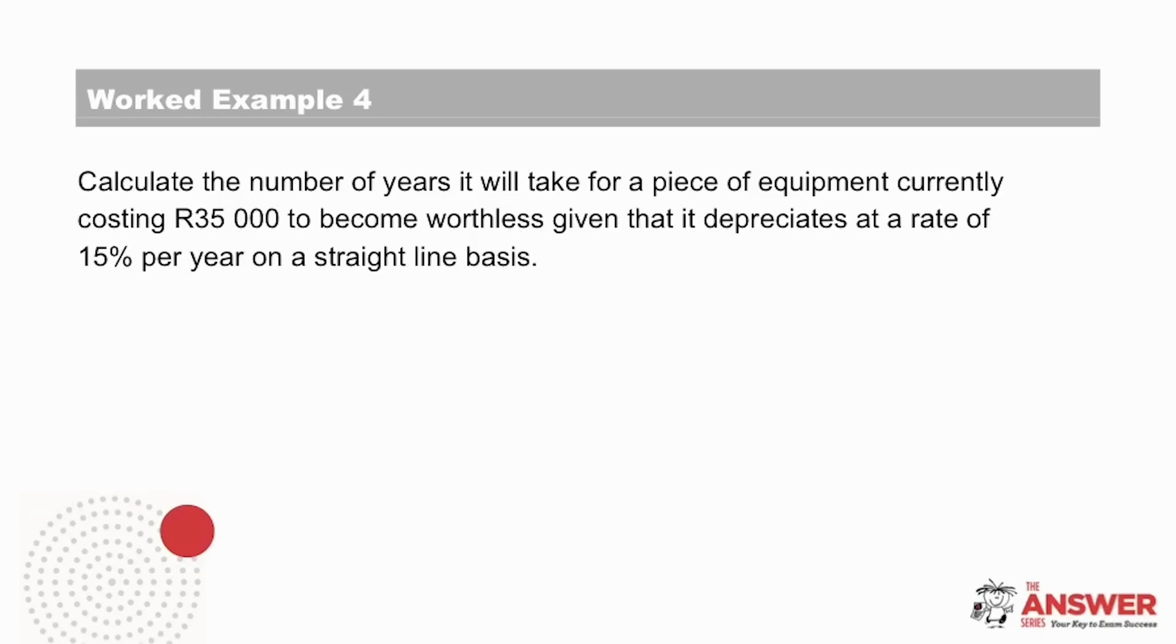So if we look at worked example four, let's start by reading it through. Then on the second read, we can focus in on the detail. So the question reads: calculate the number of years it will take for a piece of equipment currently costing 35,000 rand to become worthless, given that it depreciates at a rate of 15% per year on a straight line basis. Okay, so on the second read, we can see that we are asked to calculate the number of years it will take for a piece of equipment currently costing 35,000 rand to become worthless, given that it depreciates at a rate of 15% per year on a straight line basis.